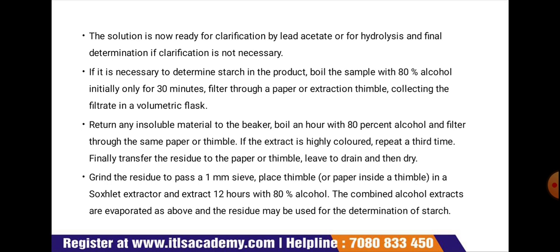If it is necessary to determine starch in the product, boil the sample with 80% alcohol initially for only 30 minutes. Filter through paper or an extraction thimble, collecting the filtrate in a volumetric flask. Return any insoluble material to the beaker and boil again for one hour with 80% alcohol. If the extract is highly colored, repeat a third time. Finally, transfer the residue, dry, grind to pass a 1 mm sieve, place the thimble in a Soxhlet extractor, and extract for 12 hours with 80% alcohol. The combined alcohol extracts are evaporated as above and the residue may be used for the determination of starch.